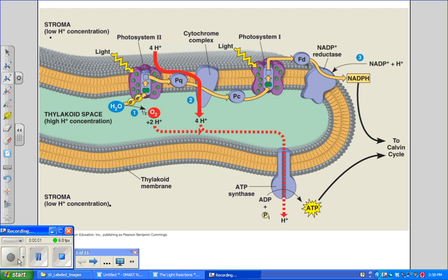Back again at the thylakoid membrane. The thylakoid membrane is populated by two types of photosystems that cooperate in the light reactions of photosynthesis. They're called Photosystem II and Photosystem I in order of their discovery, but Photosystem II is the one that functions first in the light reactions.